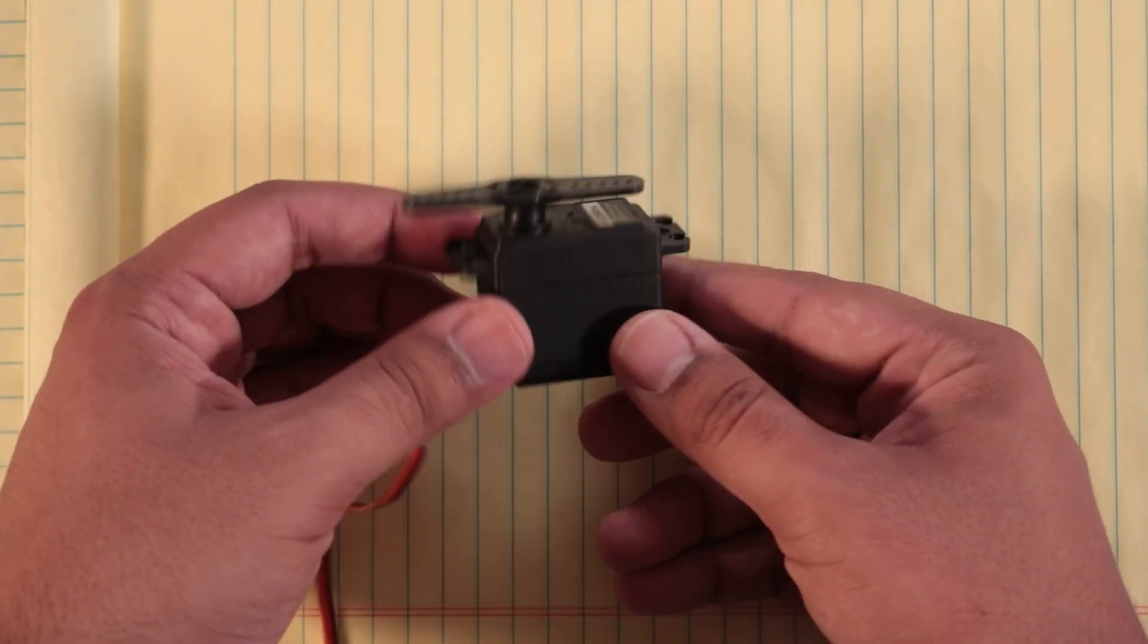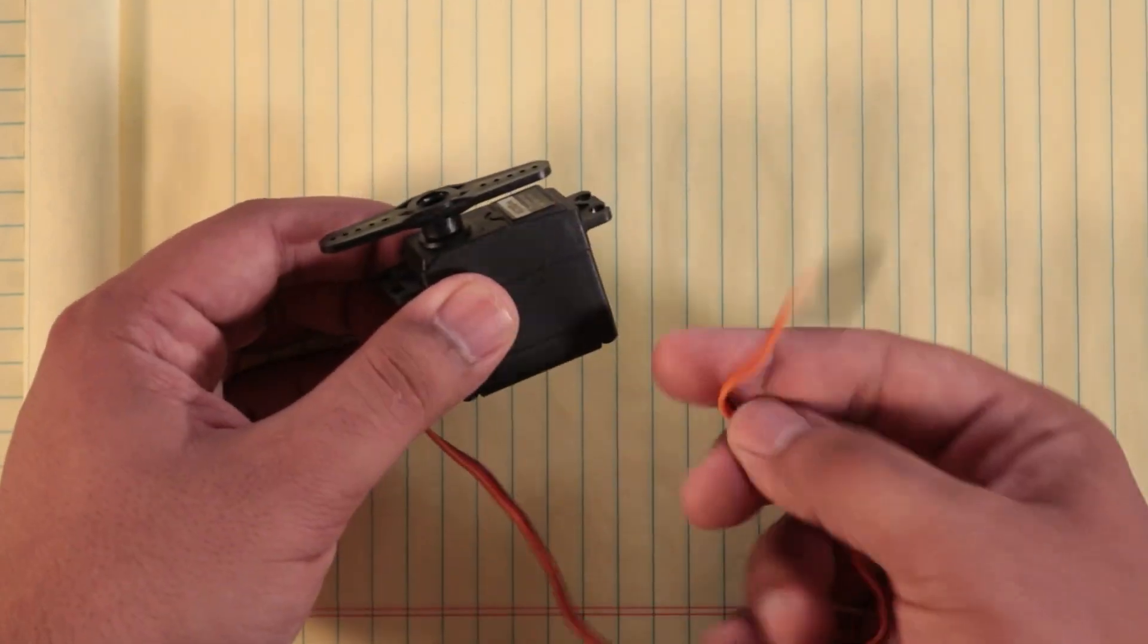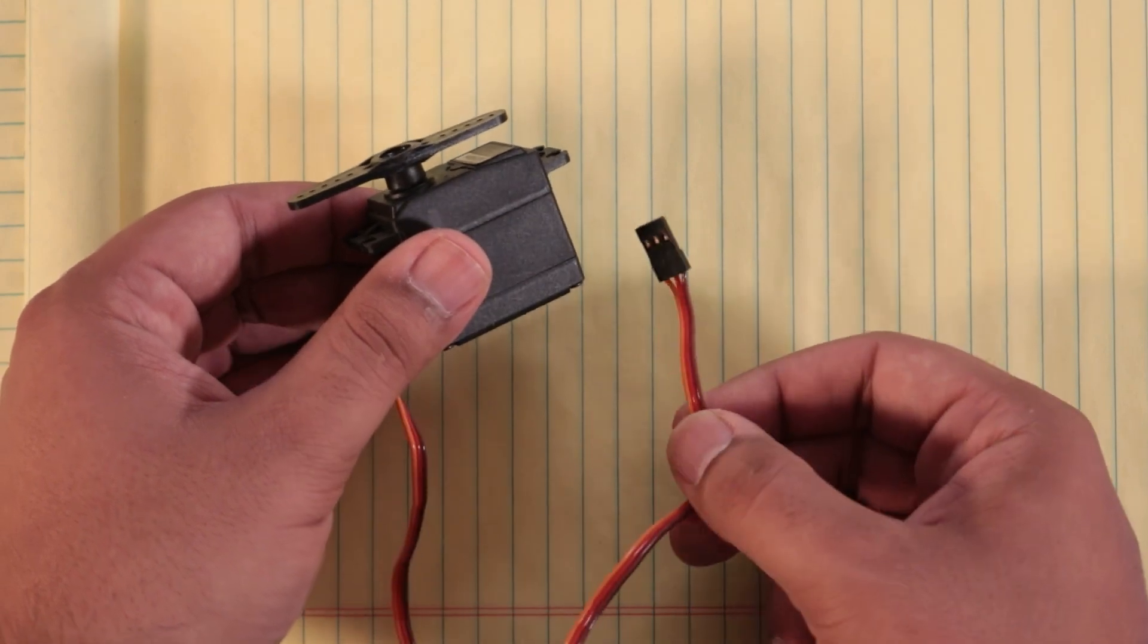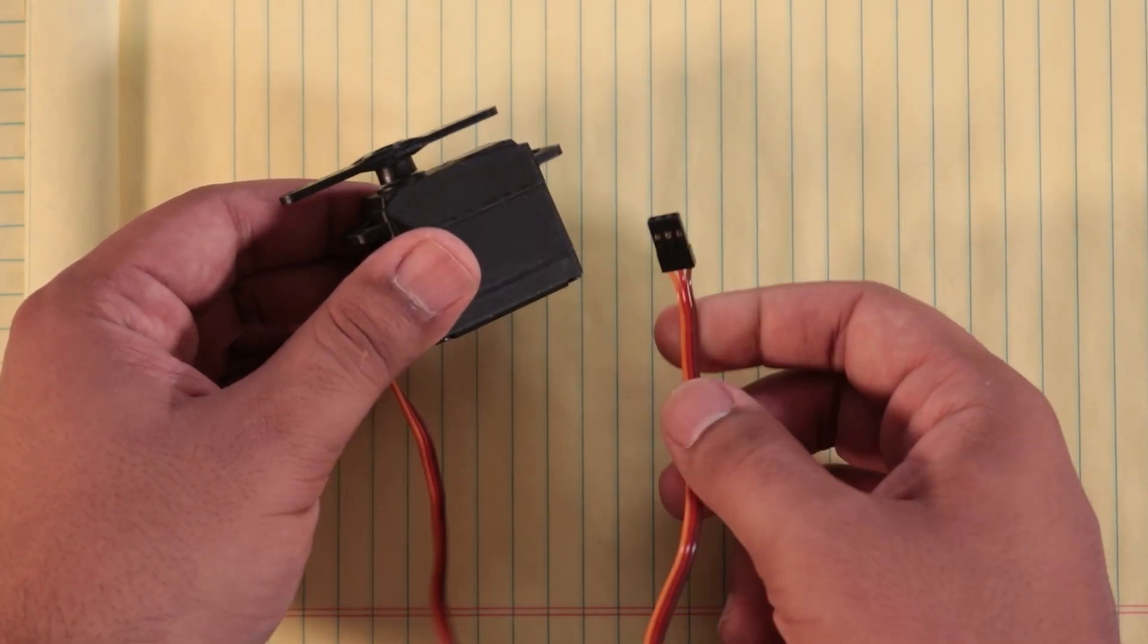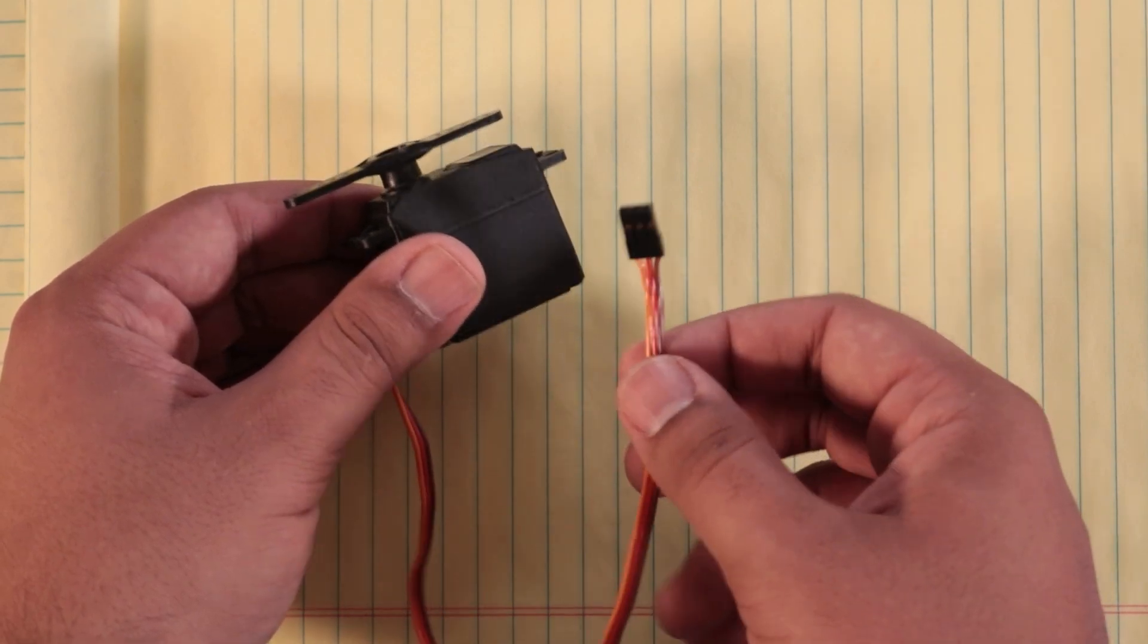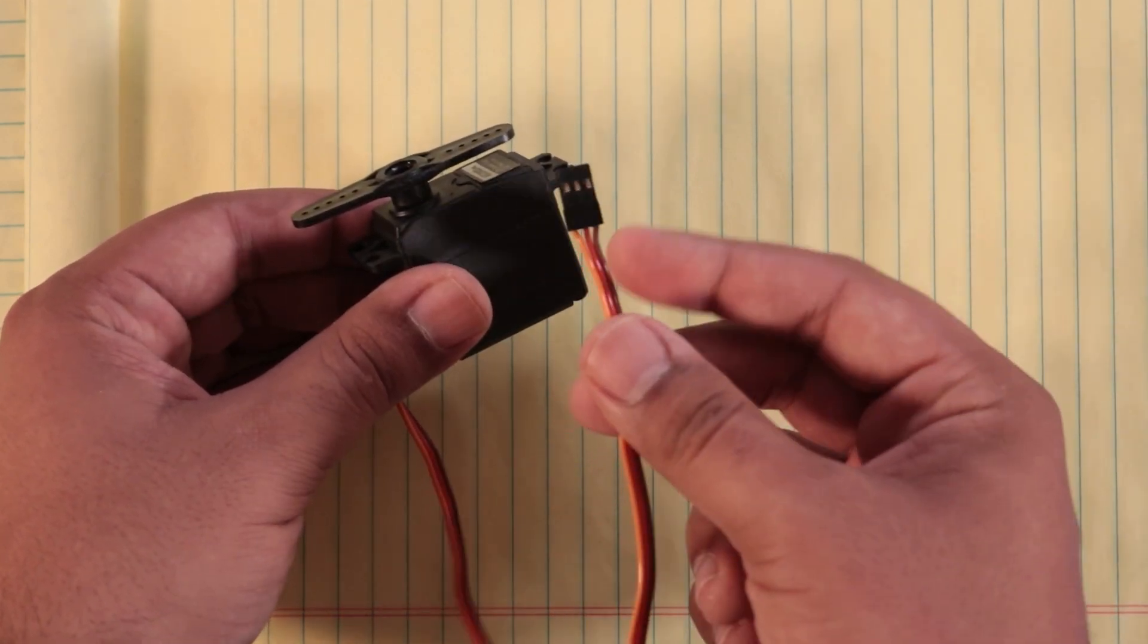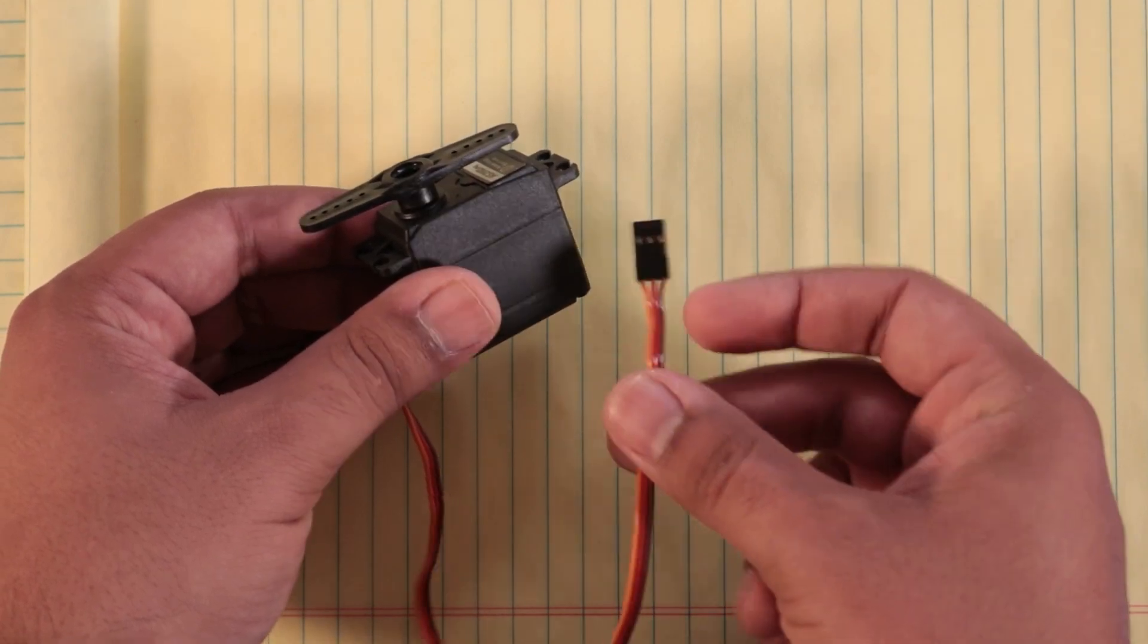This is a cheap analog servo, and it has three connections. We're only going to be talking about the cheap stuff that most of us use. So nothing with feedback, no smart servos, just cheap three-wire servos that have connections for power, ground, and a signal.